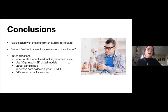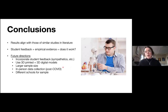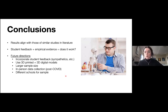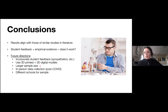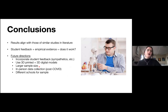Future directions include incorporating student feedback to improve the models — such as overlaying sympathetics and combining all parasympathetics into one model. Using both 3D printed and 3D digital models is also worth exploring, since students said physical models were the most helpful. A larger sample size is needed, as only three second-year students participated. Conducting in-person data collection in a post-COVID era would also be ideal, as would sampling from other schools on campus such as dental or medical students.